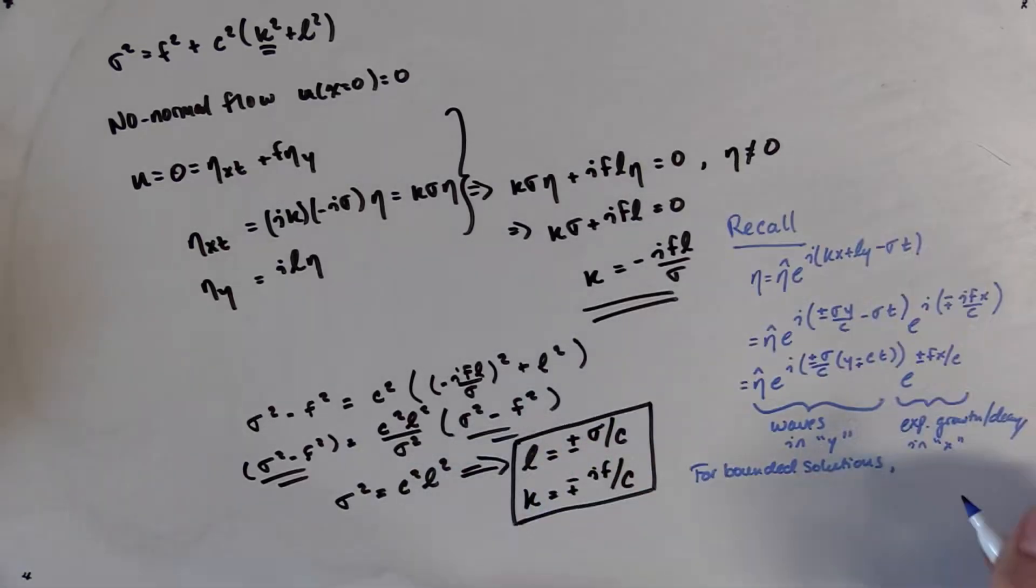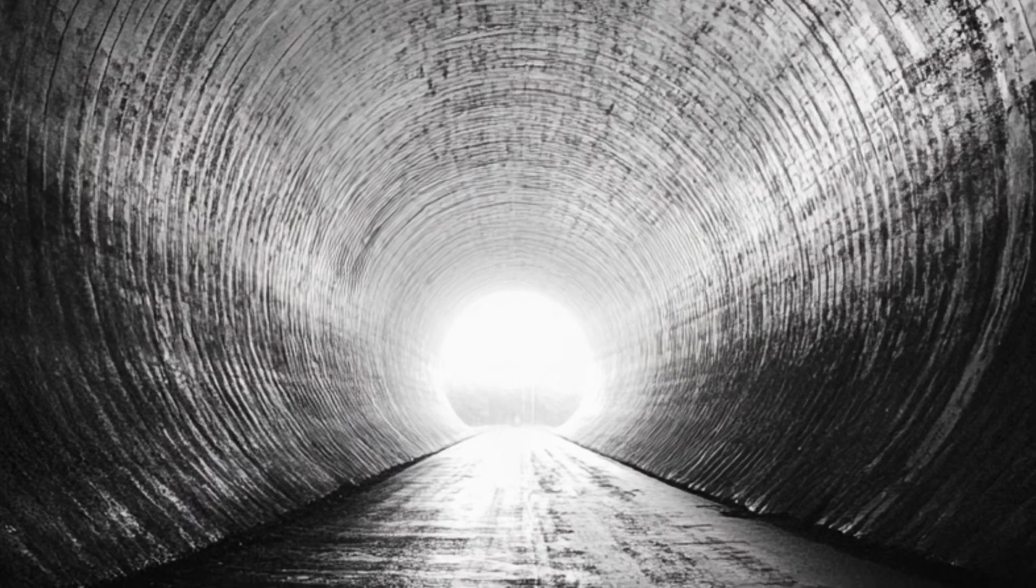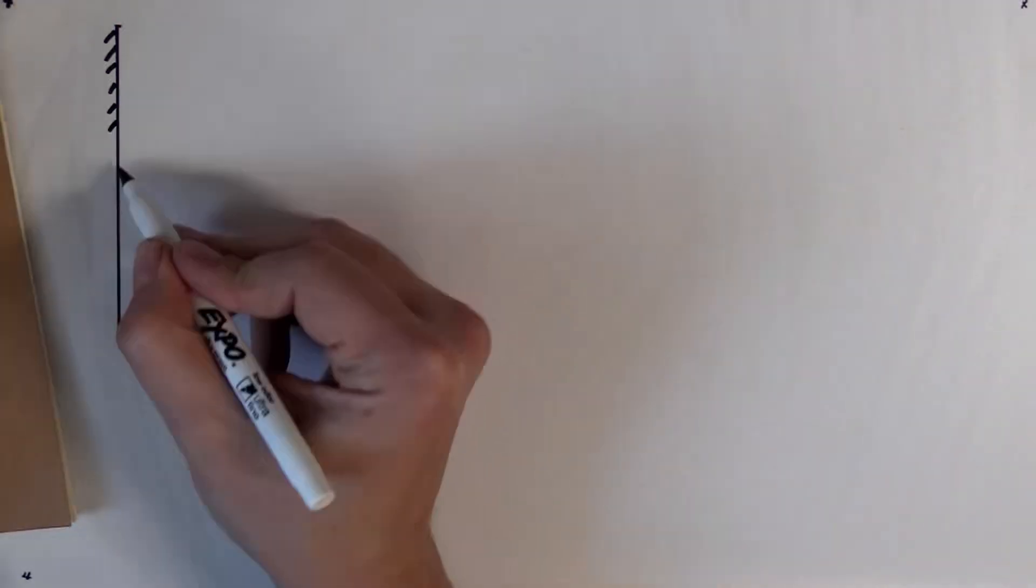If we substitute this back into the dispersion relation, we find that we have traveling waves in the y direction and we have exponential decay in the x direction. Now, in order to have a solution that is bounded, we have to choose the mode that corresponds to the exponential decay mode actually being decaying. So we have to choose the mode that corresponds to the plus i f on c value for k. I promise you, there's a light at the end of the tunnel. So let's recap. We have our plane wave solution for eta.